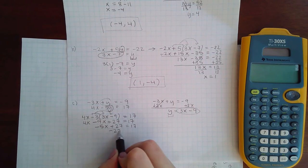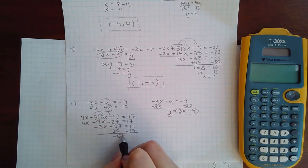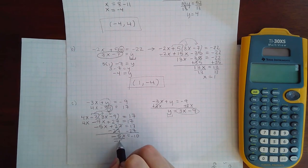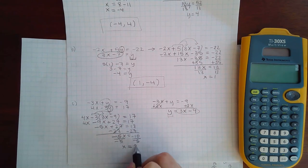And if I try to solve for x, I get negative 5x equals negative 10. Divide both sides by negative 5. I get that x equals 2.